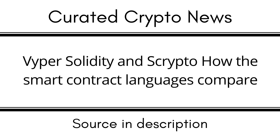Another feature excluded from Vyper is inheritance. In Solidity, multiple contracts can inherit features from a parent contract, but this also requires individuals to understand the norms of precedence. Vyper does not use class inheritance because it eliminates a potential source of complexity, contributing to improved auditability. Overall, Vyper is a more minimalist coding language that trades some functionality for increased security and better examination of its codebase to better protect users of Vyper-based smart contracts.